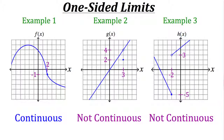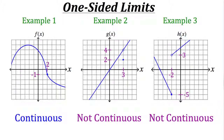To determine whether a function is continuous just by looking at the graph, check if there are any breaks or gaps — if there aren't, it's continuous. A useful guideline: if you can draw the entire graph without picking up your pencil, it's continuous, provided the curve is a function. If you have to lift your pencil — as with example 2's hole and example 3's gap — then the function is not continuous. That wraps up our tutorial on one-sided limits and continuous functions.